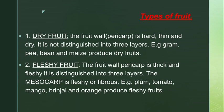Types of fruit: there are two types. One is dry fruit, another is fleshy fruit. In dry fruit, as the name suggests, the fruit wall or pericarp is hard, thin and dry. It is not divided into three layers — there are no separate epicarp, mesocarp and endocarp. Examples of dry fruits are gram, pea, bean and maize.